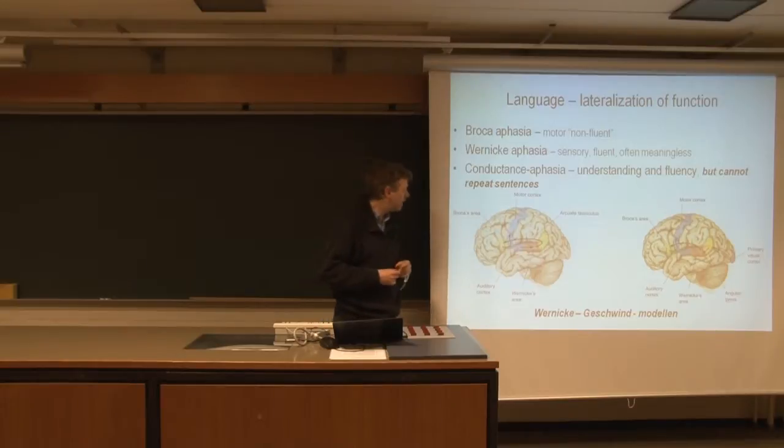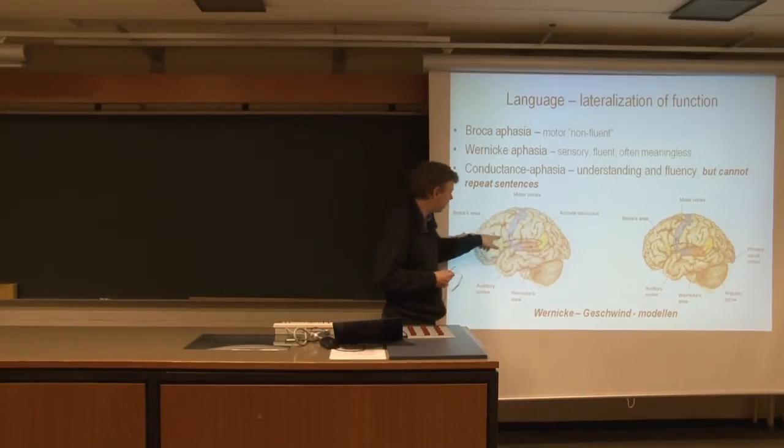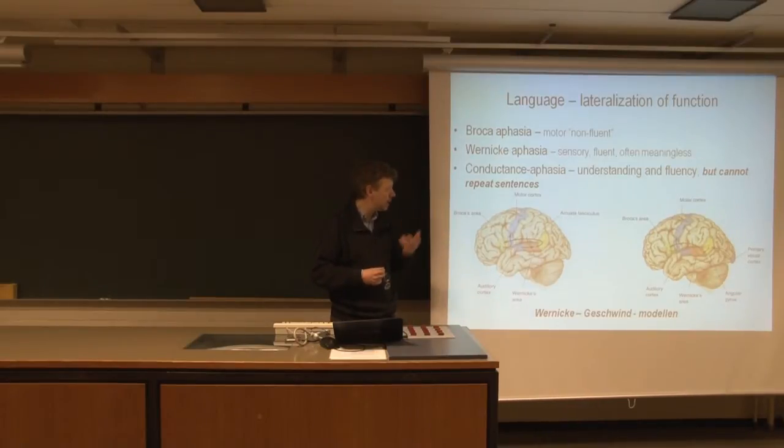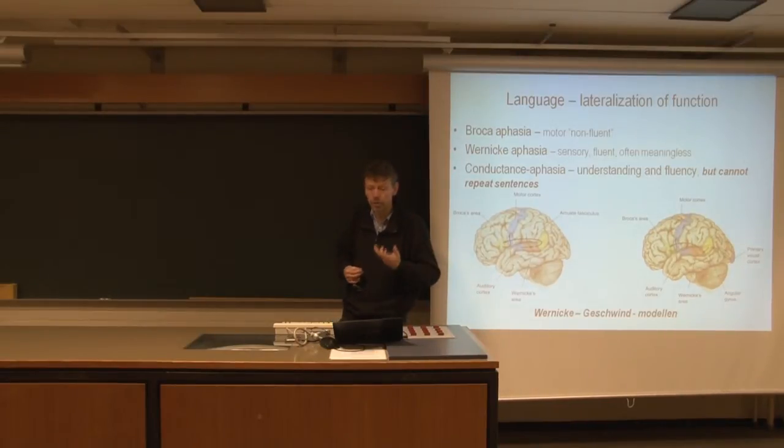So we have these two areas. There's Broca's area. So if you get a hemorrhage in this part of the brain, you lose your ability of making fluent speech.